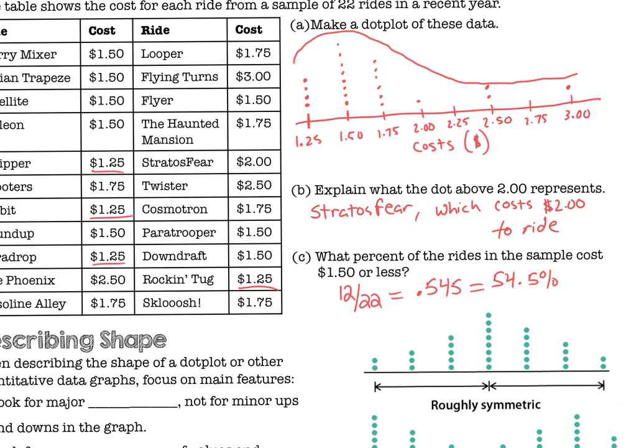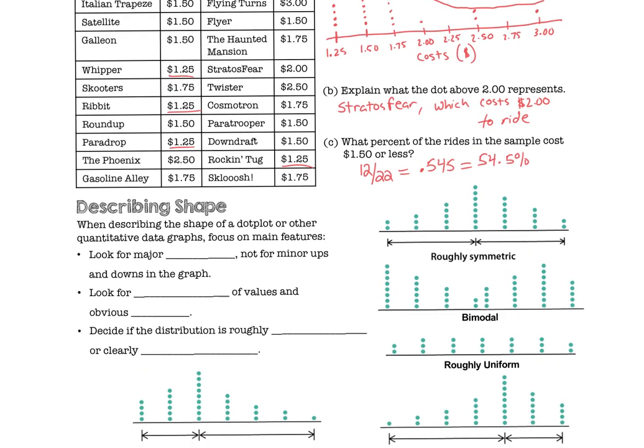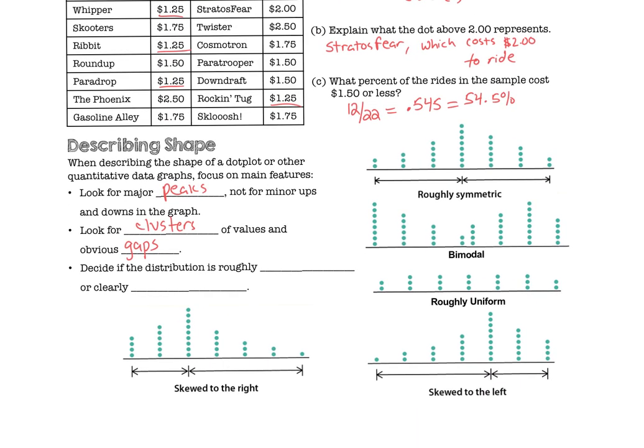I talked to you about shape here, and if you look to describe our shape, when we describe the shape of data, what we're trying to do is look for major peaks, not for minor ups and downs. We're looking for clusters of values and obvious gaps. We want to decide if the distribution is roughly symmetrical, meaning the peak is in the center, or clearly skewed, which means the majority of your data is concentrated one way or the other.